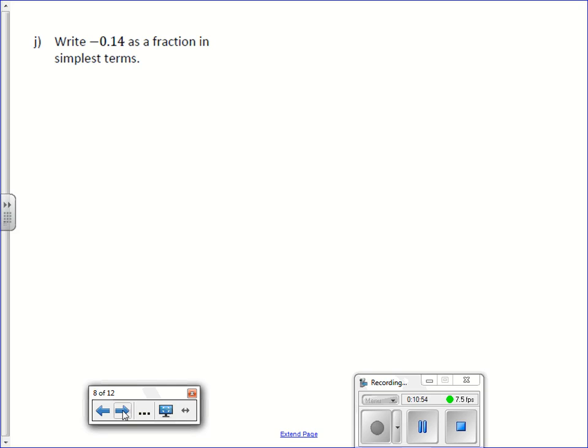Negative 0.14 or negative 14 hundredths. The last digit is in the hundredths place. That's how I know it's out of a hundred. They're both even so I can divide by 2. The negative sign stays: 7 over 50. And I can't go any further.